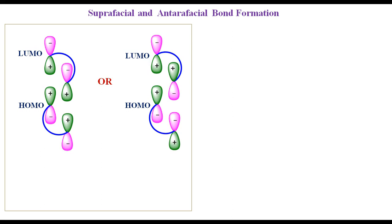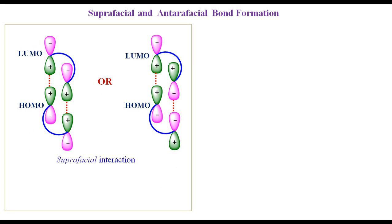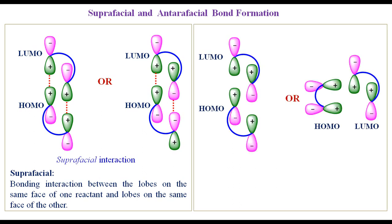Now we will learn two terminologies which will be used for the derivation of Woodward-Hoffmann selection rules for cycloaddition reactions. For a cycloaddition reaction to occur, the HOMO of one reactant interacts with the LUMO of the other. A positive terminal lobe of one can interact with the positive terminal lobe of the other, and a negative terminal lobe of one can interact with the negative terminal lobe of the other. If the HOMO and LUMO of the two reactants are such that bonding interactions occur between lobes on the same face of one reactant and the same face of the other, the interaction is called suprafacial. If bonding interaction occurs between lobes on the same face of one reactant and lobes on the opposite face of the other, the interaction is called antarafacial.